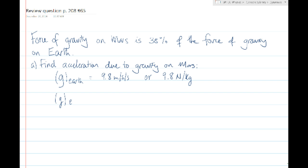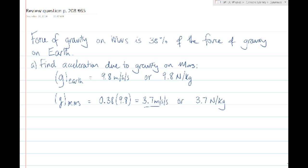The g value on Mars would be 38%, or 0.38 — 38% as a decimal — multiplied by 9.8, which equals 3.7 meters per second per second on Mars. Another way of looking at it would be 3.7 newtons per kilogram on Mars. Since the force of gravity is 38% of the force of gravity on Earth, the acceleration due to gravity would also be 38% of the value on Earth, which is 3.7 meters per second per second.